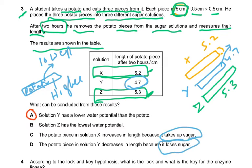When you place potato pieces in a sugar solution, inside the cytoplasm the plant also has some sugars and solutes. If you put it in plain water, water just gets in. But different sugar solutions let you find the concentration of the cell sap — the solution where there is no net change in length matches the concentration inside the cell.